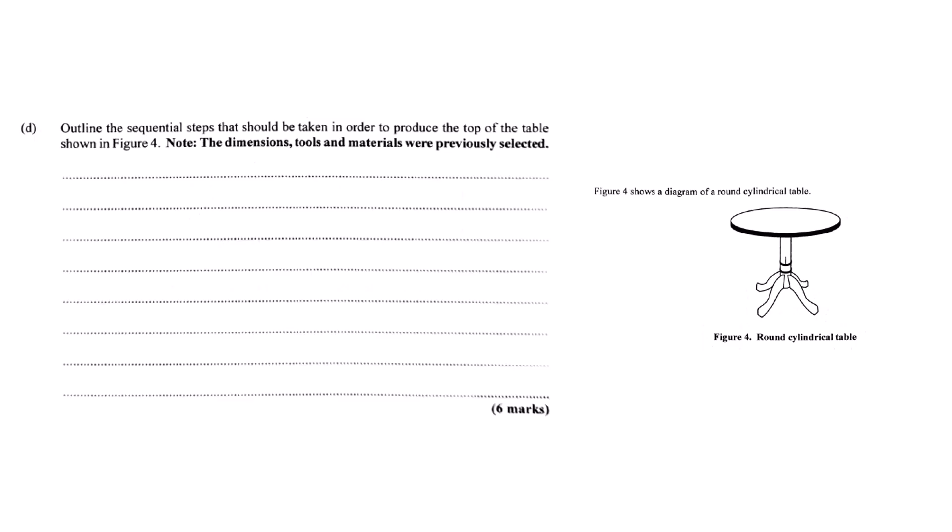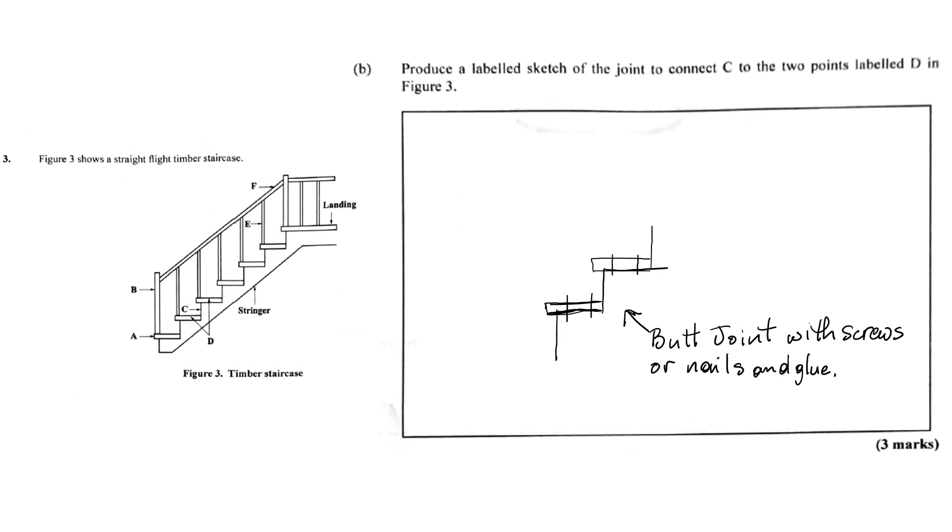We've done shelves, tables. A quick one - staircases. How do the treads, the bits you step on, and risers, the vertical bits, join? In many basic staircases it's often a simple butt joint. The back edge of the tread butts up against the front face of the riser, but it's reinforced. They're both typically glued and nailed or screwed directly to the main supporting beam on the side, which is called the stringer. That provides the real strength.